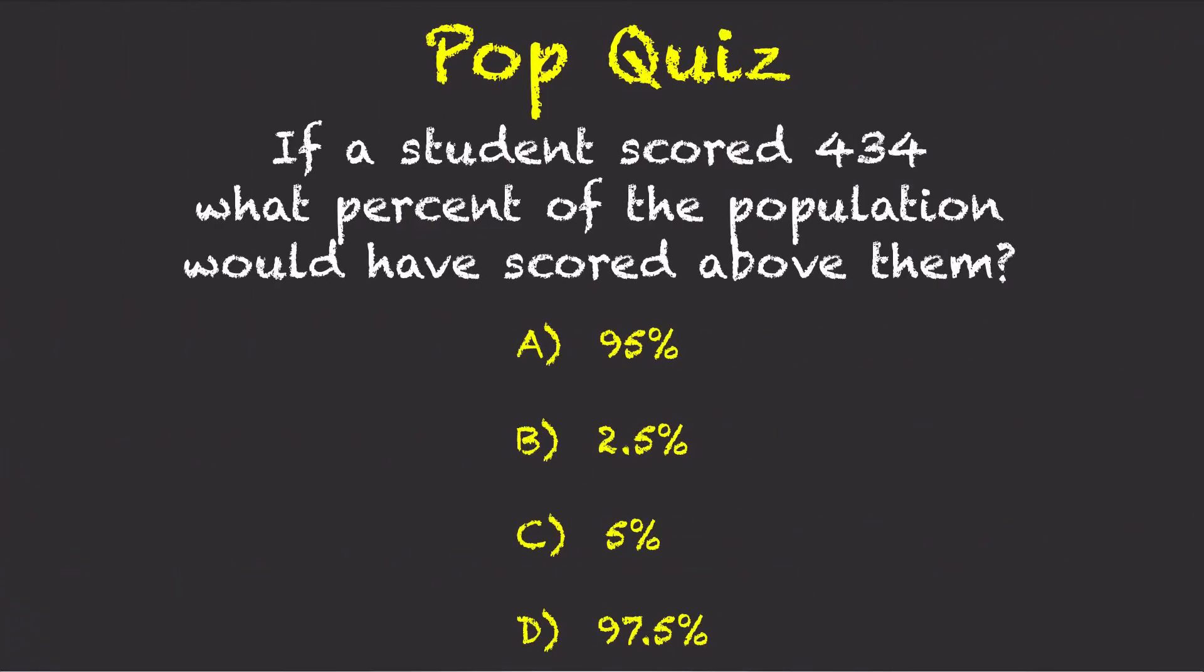If a student scored 434, what percent of the population would have scored above them? A. 95%? B. 2.5%? C. 5%? D. 97.5%?